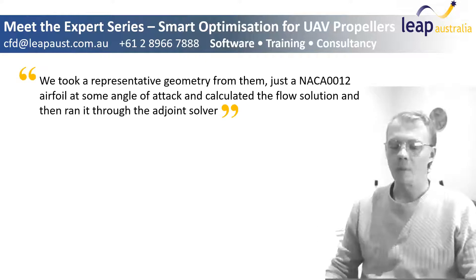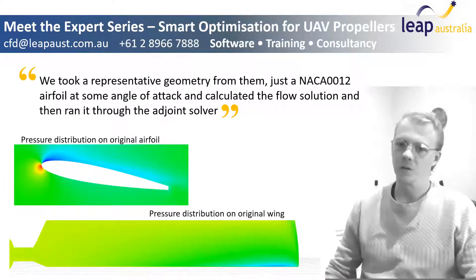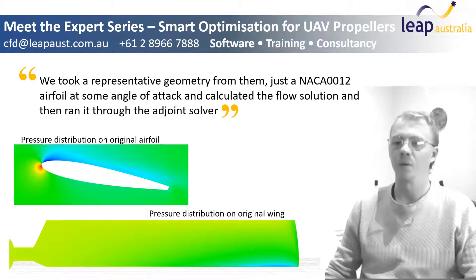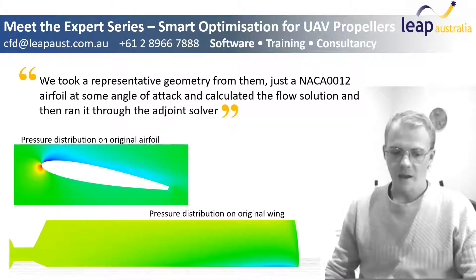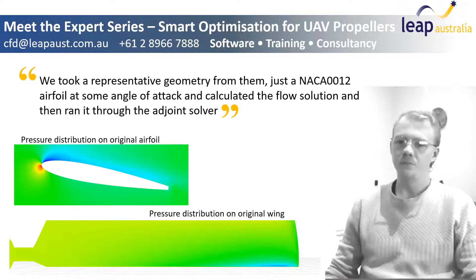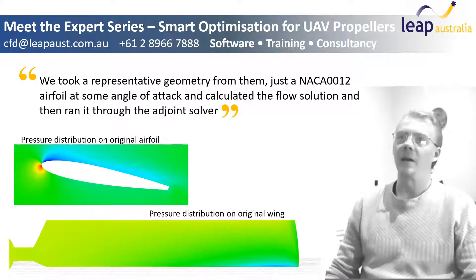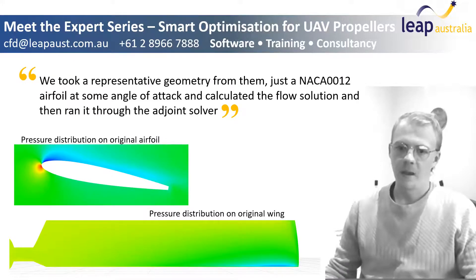We took a representative geometry from them — a NACA 0012 airfoil at some angle of attack — calculated the flow solution, and then ran it through the adjoint solver.